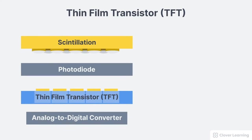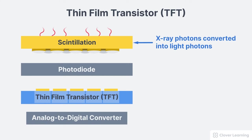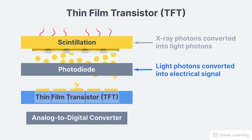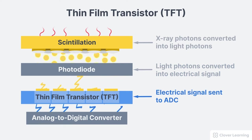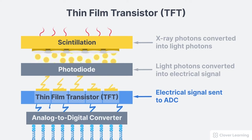Now let's move on to TFT systems, which also use the scintillation layer just like the CCD systems, but they have additional elements. After the scintillation layer, there is a photodiode layer made up of amorphous selenium and then a TFT array. When x-ray photons strike the scintillation layer, they are converted into light photons. The photodiode layer converts the light photons into an electrical signal that is transferred to the TFT array. From there, the TFT array sends the electrical signal to an analog-to-digital converter to produce a digital signal, which is then sent to a computer for processing.